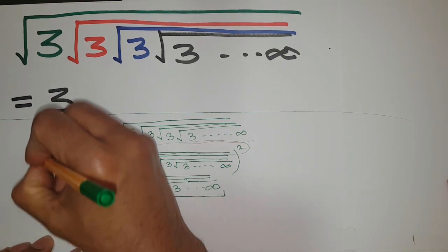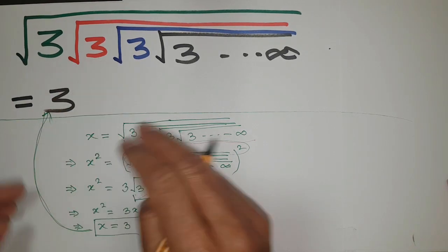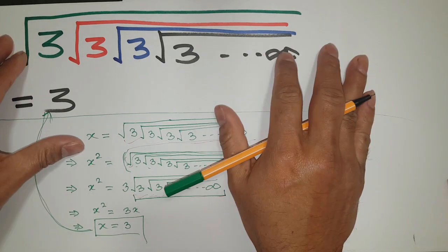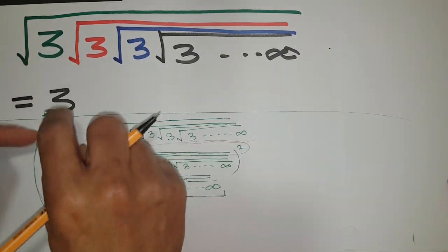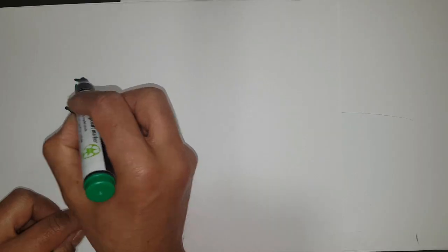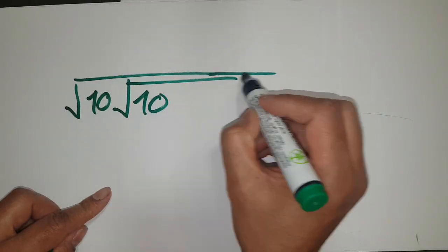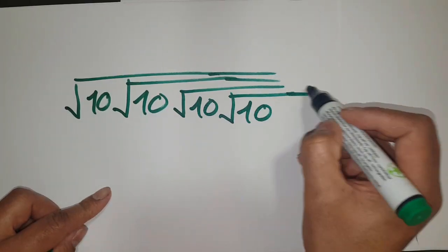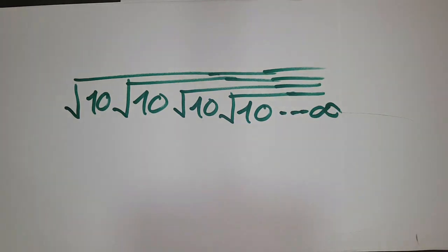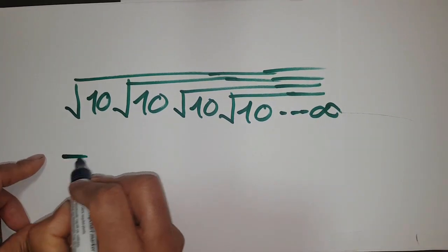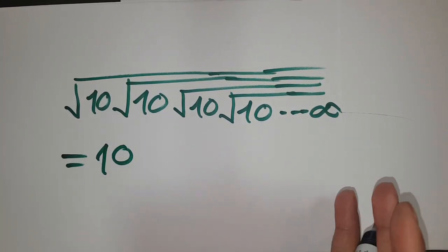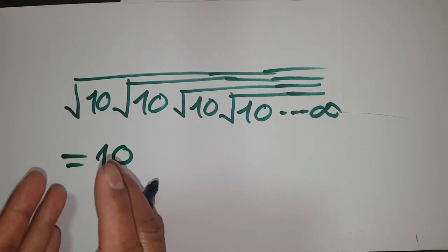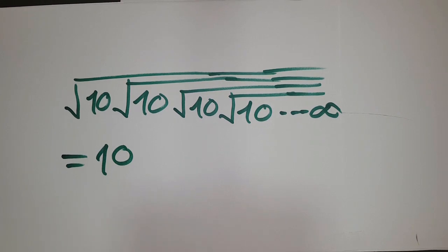Just simply think: if this type of infinite nested square root series comes, the answer is simply the digit under the root. In the same way, the answer of this mathematical statement — square root of 10 covering another square root of 10, and so on — is 10. Hopefully you understand what exactly happens behind this mechanism.